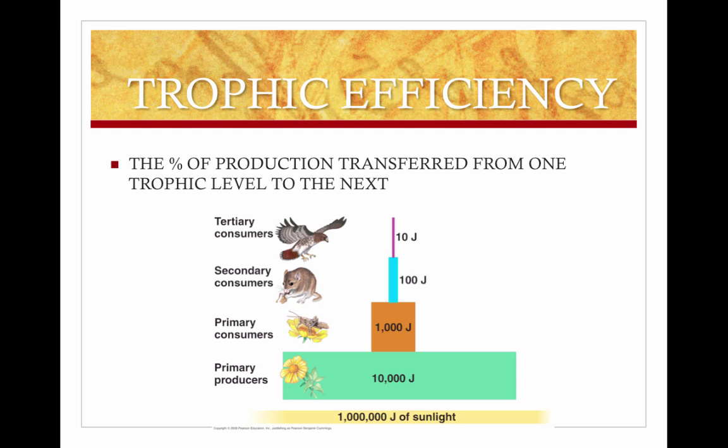If we move away from production efficiencies of individuals, we can look at energy flow through the trophic levels. Trophic efficiency is about 10%, and it's always less than productive efficiencies because it accounts for not only energy lost through respiration and in feces, but also the energy in organic matter in a lower trophic level that is not consumed by the next trophic level. The progressive loss of energy along a food chain severely limits the number of top-level consumers.